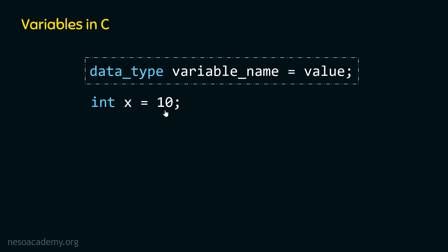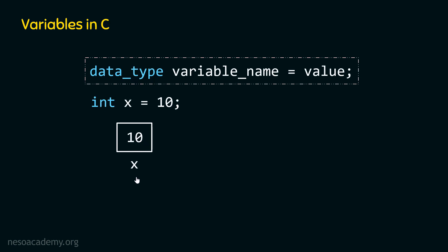Internally, what happens is that some memory is allocated to variable x. That memory is enough to store an integer value because we have already specified the type of this variable as integer. Hence, memory enough to store an integer is allocated to variable x. Then, with the help of the assignment operator, value 10 is assigned to variable x. So, first memory is allocated and then value 10 is stored in that memory. In this way, a variable is created in C.